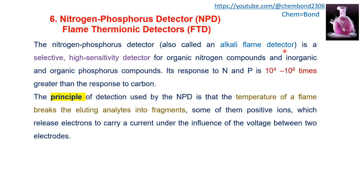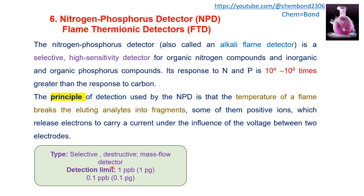The nitrogen phosphorus detector (NPD), also known as the alkali flame detector, is a selective, highly sensitive detector for organic nitrogen compounds and inorganic and organic phosphorus compounds. It responds to nitrogen and phosphorus at 10^4 to 10^6 times greater than its response to carbon. The principle of NPD is that the temperature of the flame breaks the eluting element into fragments, some into positive ions which release electrons to carry a current under the influence of voltage between two electrodes. Temperature breaks down the eluting element into fragments, producing positive ions and electrons, and current is produced when these positive ions move towards the collector electrode.